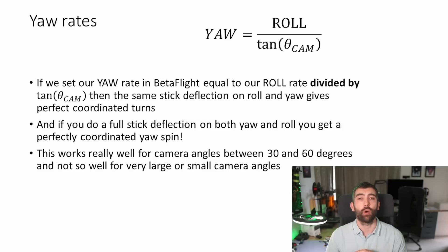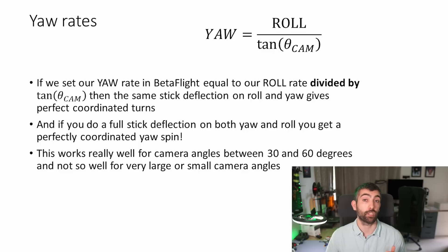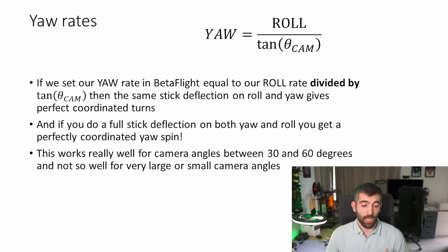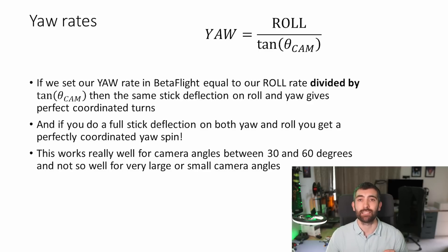This technique works fantastically well for camera up tilts between about 30 and 60 degrees, and not so well for very large or very small camera angles. So if you're running a typical freestyle camera angle — anywhere from around 30 up to maybe 45 degrees — this technique is going to work brilliantly for you.